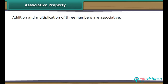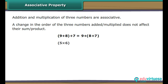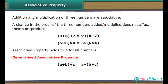Associative property: addition and multiplication of three numbers are associative. A change in the grouping does not affect their sum or product. For example, (9 plus 8) plus 7 is the same as 9 plus (8 plus 7); (5 into 6) into 4 is the same as 5 into (6 into 4). We generalize: (A plus B) plus C equals A plus (B plus C), and (A into B) into C equals A into (B into C).